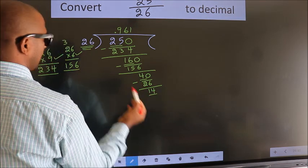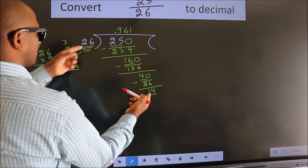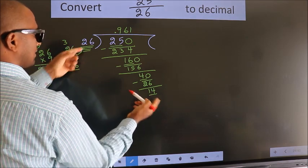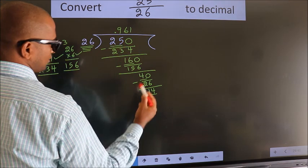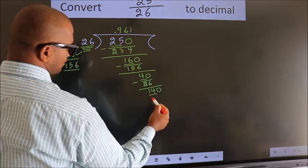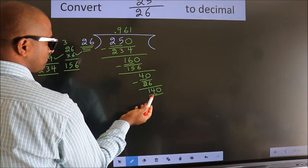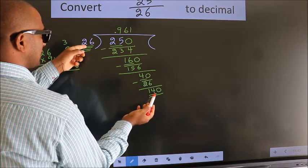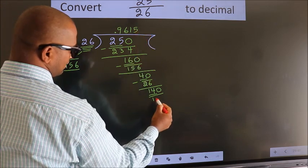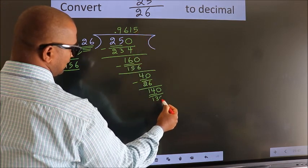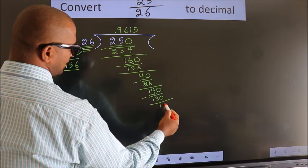Here we have 14, here 26. 14 is smaller than 26. We already have the decimal, so we can directly take 0. So 140. A number close to 140 in the 26 table is 26 fives, which is 130. Now we subtract. We get 10.